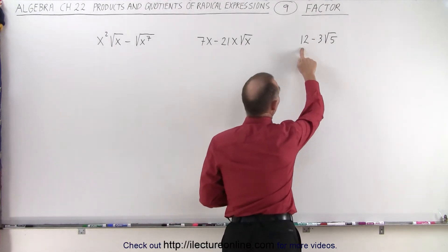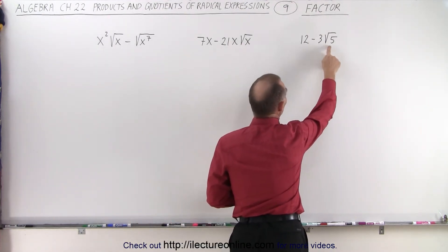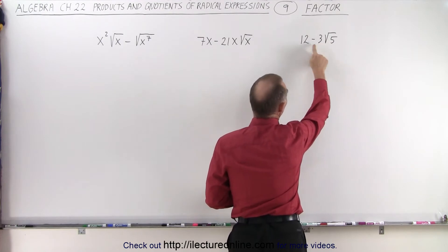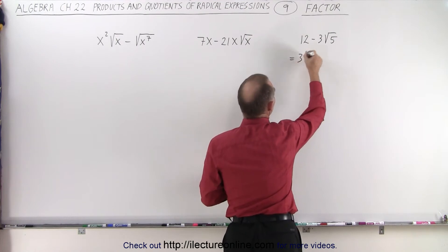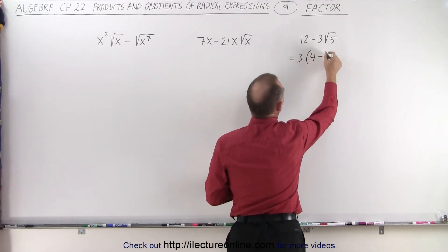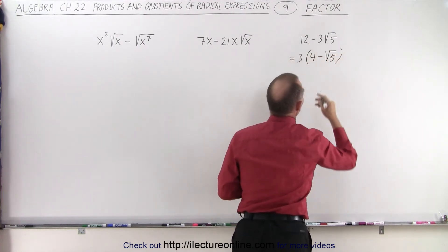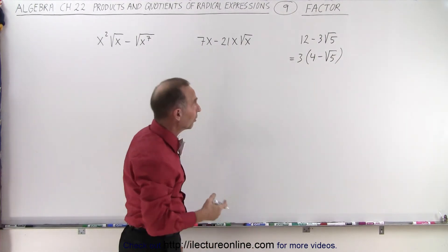So in this case, notice we have 12 and minus 3 times the square root of 5. You can see that 3 is the common factor in both. We can factor it out. So this is equal to 3 times 4 minus the square root of 5. There, we simply factor out the number 3.